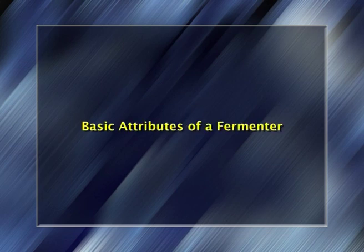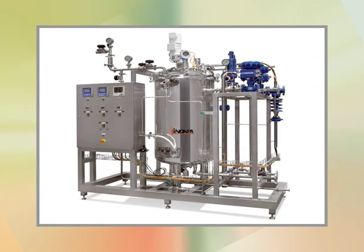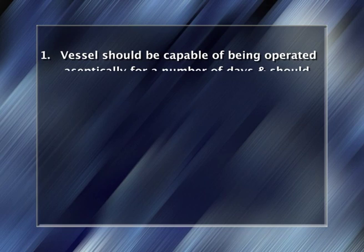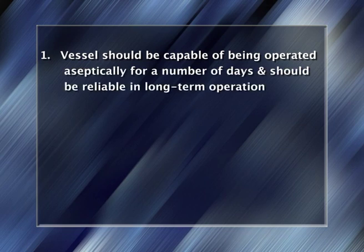6. The disposal of effluents produced by the process. It is mandatory to discuss the basic attributes of a fermenter. The main function of a fermenter is to provide a controlled environment for the growth of microorganisms or animal cells to obtain a desired product. In designing and constructing a fermenter, a number of points must be considered. The vessel should be capable of being operated aseptically for a number of days and should be reliable in long-term operation.